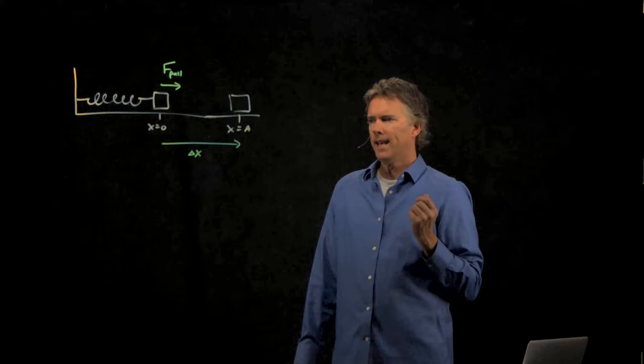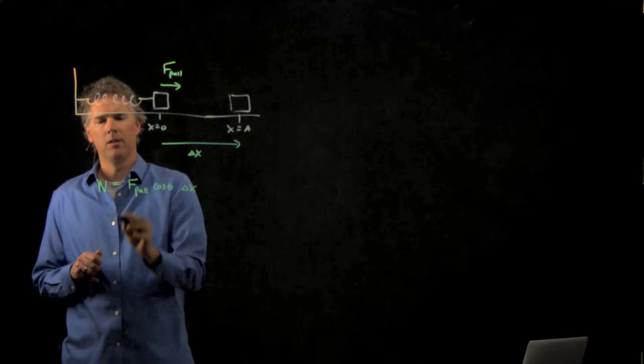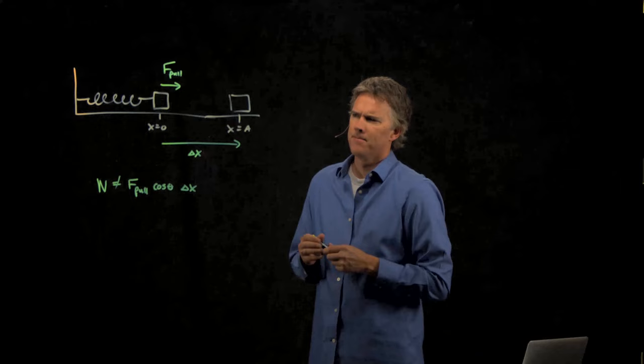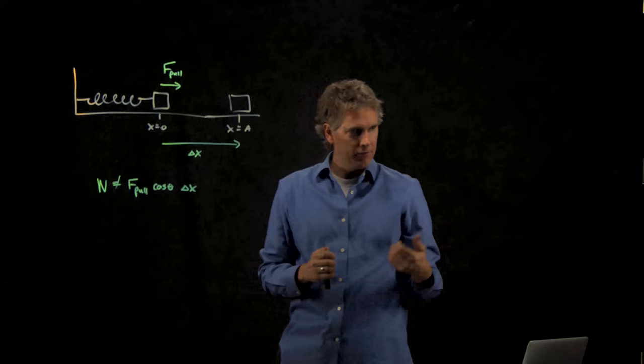So we can't just write this. Work is not f pull cosine theta delta x. Why can't we do that? We can't do that because as you pull on the spring, it gets harder and harder to pull on the spring. The force varies as you go, and so we can't just write that.